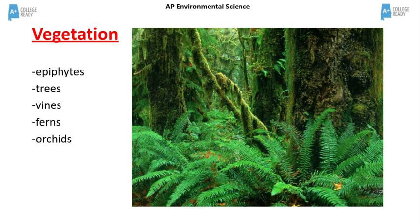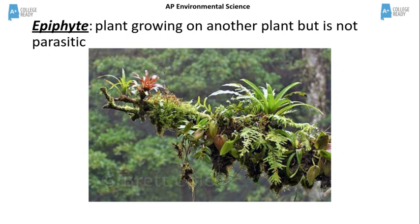Plants found in tropical rainforests include trees, vines, ferns, and orchids. An epiphyte is a plant that grows on another plant but is not parasitic. They are very common in the tropical rainforest.